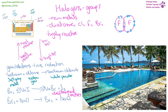Halogens are mostly used for sterilizing things — for example, chlorine, which you'll commonly know as being used in swimming pools. Halogens want to gain one electron, so the most reactive ones are at the top. That's where there is the least shielding between the electron they want to gain and the nucleus.